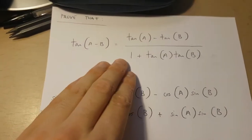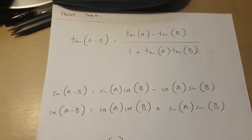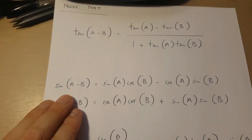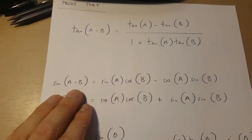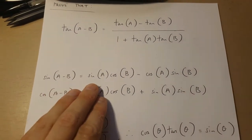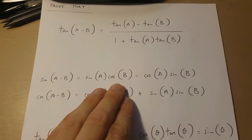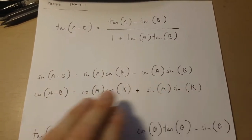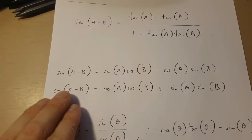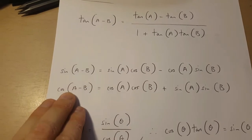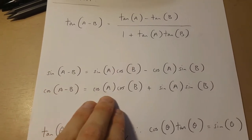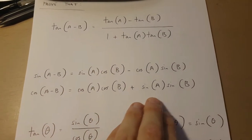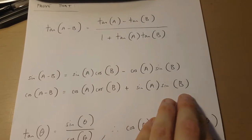In order to prove this, there are a few things I need to know. Firstly, sin(A minus B) equals sin A cos B minus cos A sin B. Secondly, cos(A minus B) equals cos A cos B plus sin A sin B.